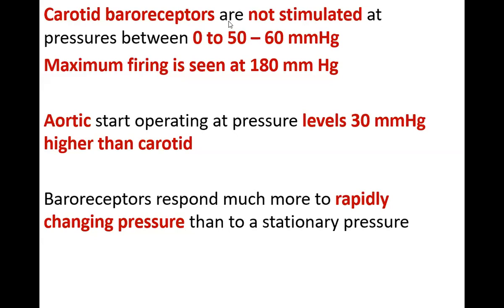Always remember that baroreceptors are not stimulated unless blood pressure is above 60 mmHg. Normal blood pressure ranges from 70 to 175 mmHg — regular impulses go from baroreceptors; when blood pressure goes above 175 the rate of impulses goes on increasing further, and it is maximum at 180 mmHg. When blood pressure goes below 60 mmHg, the baroreceptor stops sending impulses at all, and then the nucleus tractus solitarius interprets the changes and does the necessary stimulation of sympathetic or parasympathetic nervous system.